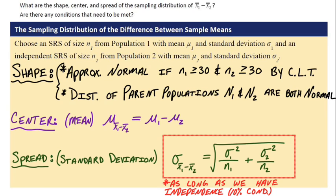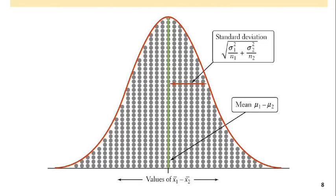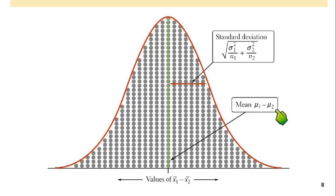So we've got the shape, center, and spread. That's why we take the time in the plan step to meet each condition: the normality condition, the independence condition, and the mean relies on the randomness condition. Every single one of these dots would be a value of x bar 1 minus x bar 2. The mean would be at mu 1 minus mu 2, and there's our standard deviation. We typically use a simulation approach to illustrate every possible difference we could get for x bar 1 minus x bar 2. The shape is approximately normal, the center is mu 1 minus mu 2 — that's where the green line is — and the spread, measured in standard deviation, is shown here.